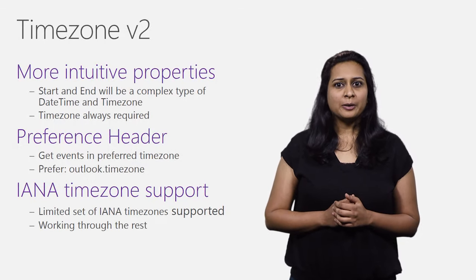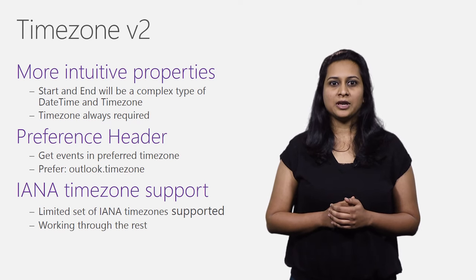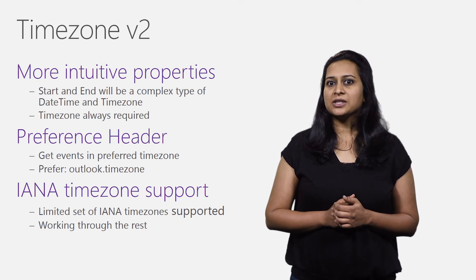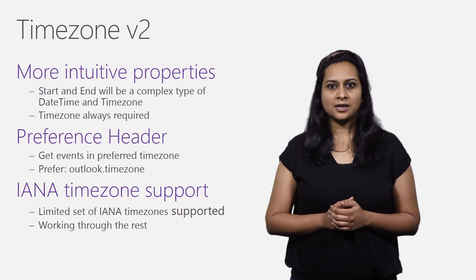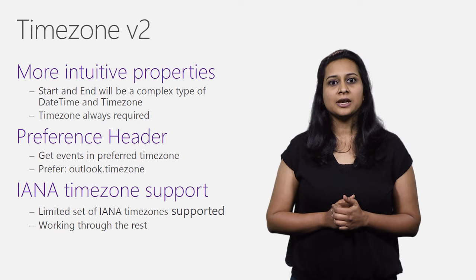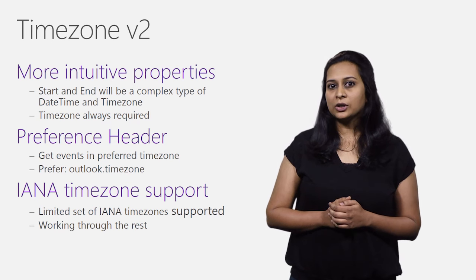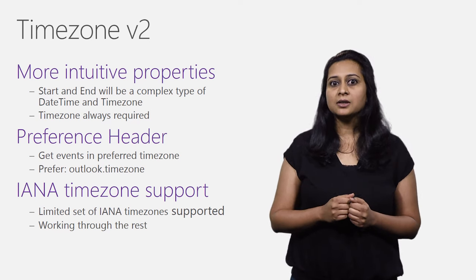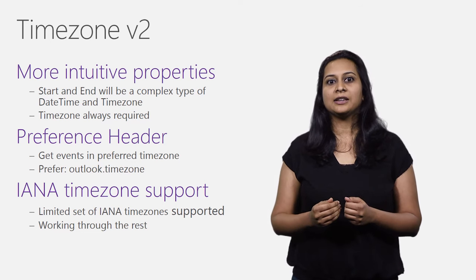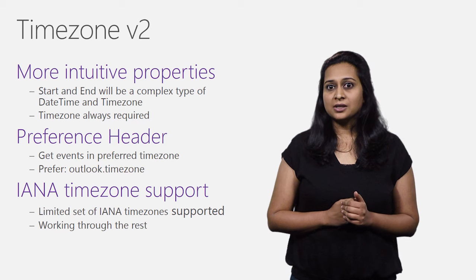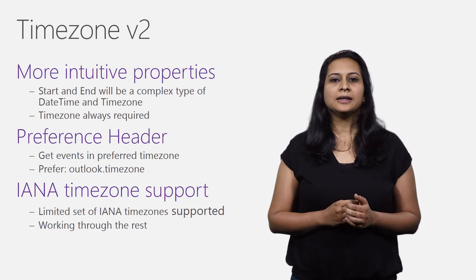Time zone. We listened to your feedback on our implementation of time zone in V1 and have made changes to the event entity to make it much easier to work with time zones. The first change is that start and end properties for events are now a complex type of DateTime and TimeZone. TimeZone is a string, and the API will accept Windows time zones or a limited set of IANA time zones. DateTime is a custom-defined Outlook services type. When creating an event, the app needs to pass in a DateTime converted to a string. When retrieving an event, the service returns a DateTime-formatted string. Note that any time the start and end properties are updated, TimeZone will be required. Because of these changes, filtering and sorting of events is slightly different from V1, and the app needs to use start/dateTime and end/dateTime in the query.